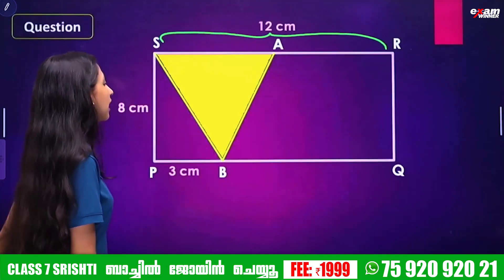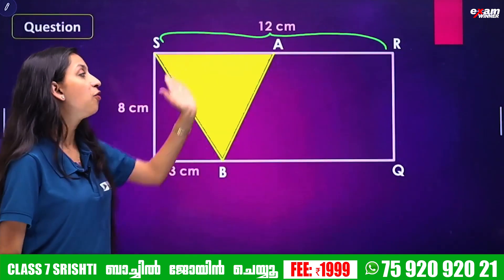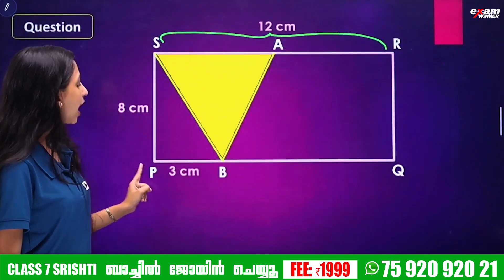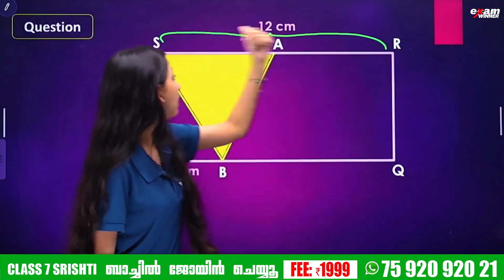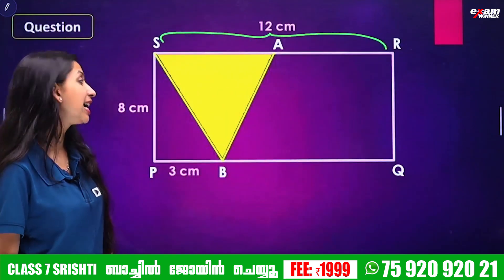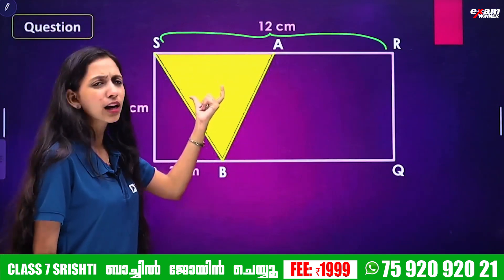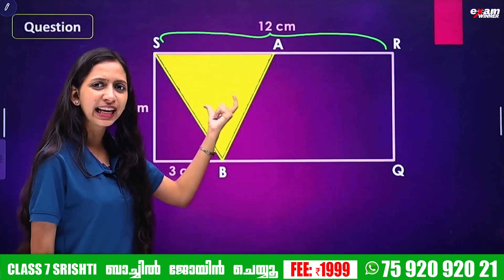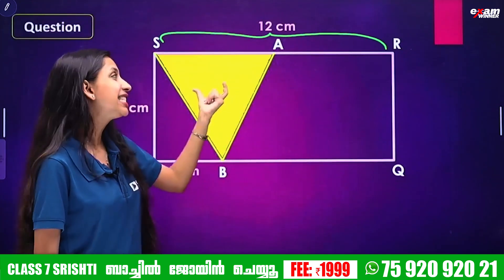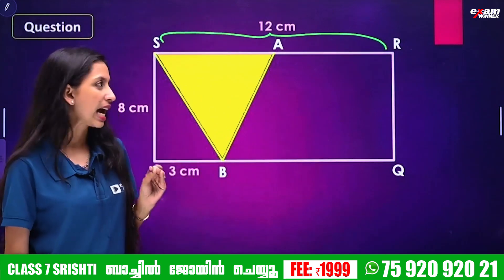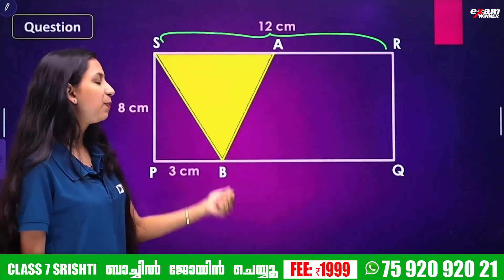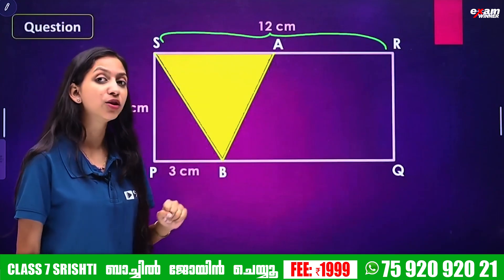The next question: we have a rectangle here, right? It's called P, Q, R, S — a rectangle PQRS. There is a shaded triangle in yellow color. It's a triangle A, S, B.